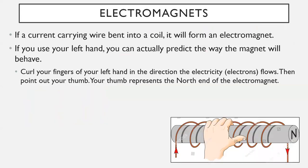Moving on to electromagnets — there's a little new piece of information here. As a reminder: if you have a current-carrying wire bent into a coil and you run a current through it, that forms an electromagnet. That coil of wire behaves as a magnet with a north end and a south end, as long as it's coiled and electricity is flowing through it. Here's something interesting you don't need to know for this course, but in Physics 30 you will — so you're learning it early.